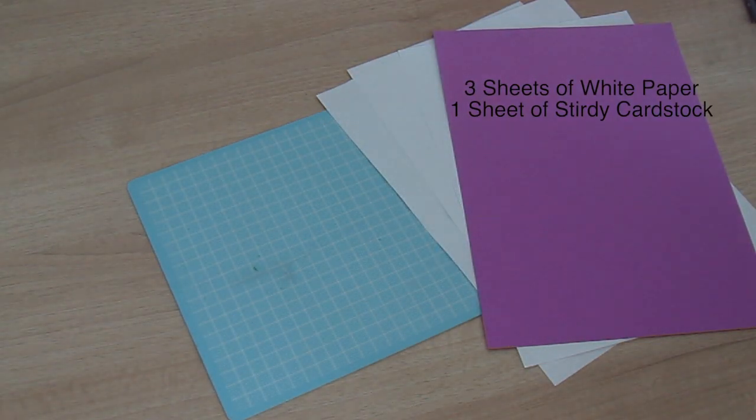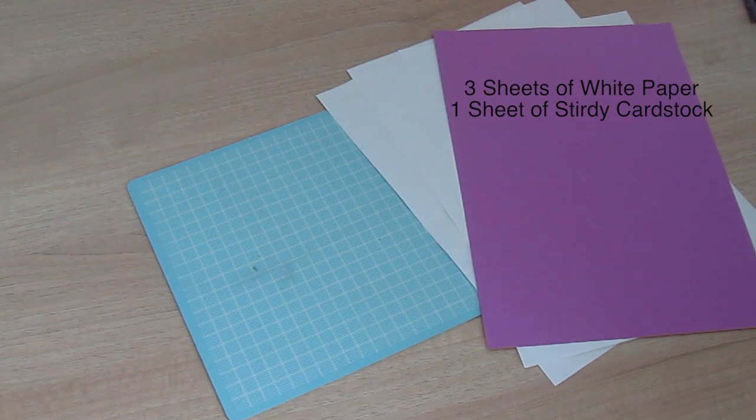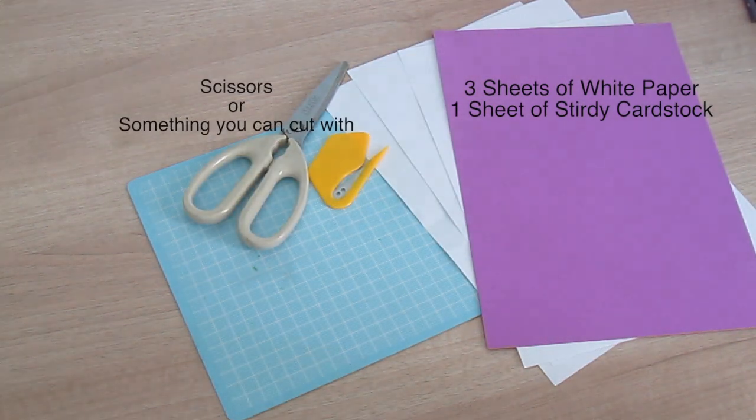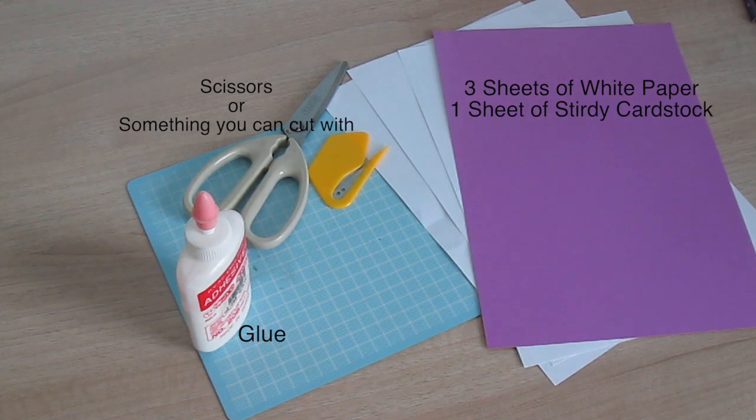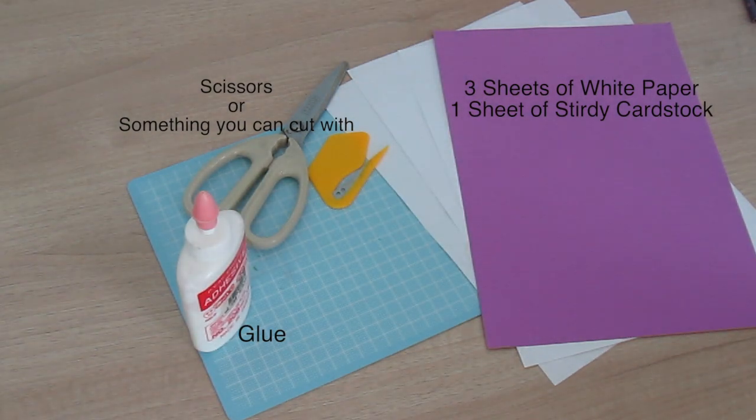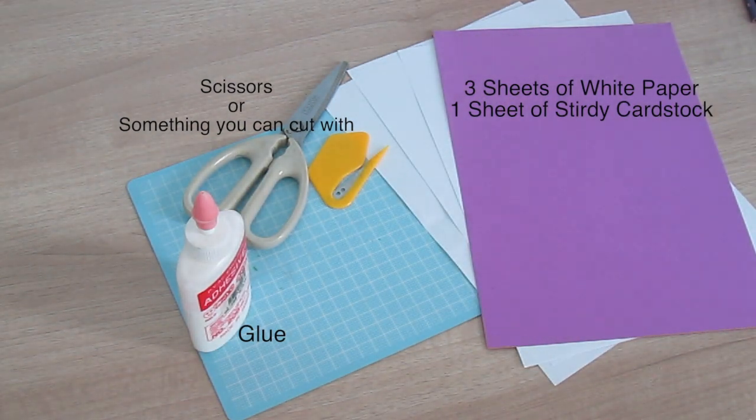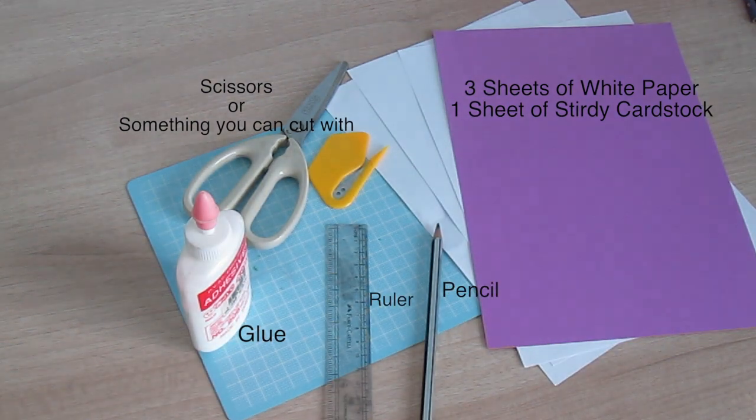You're going to need three sheets of white paper and one sheet of sturdy cardstock. Then you'll need some cutting materials and some glue. I'm using white glue—you can use hot glue, but don't use glue sticks because they're not strong enough. Then you'll also need a ruler and a pencil.